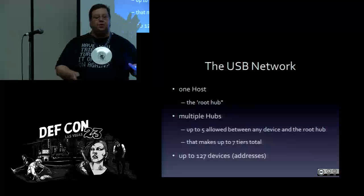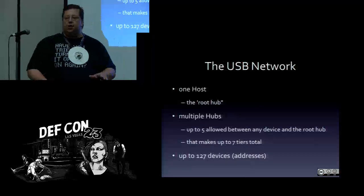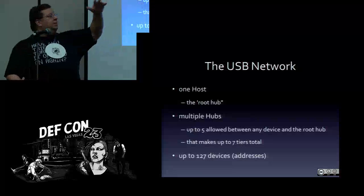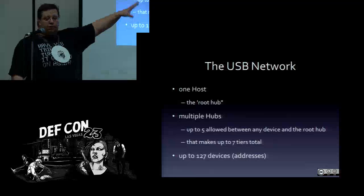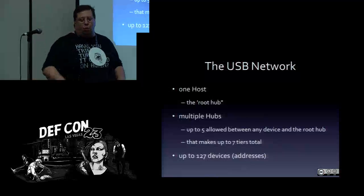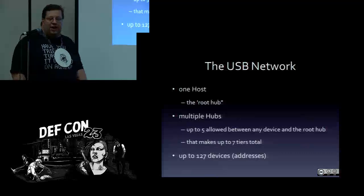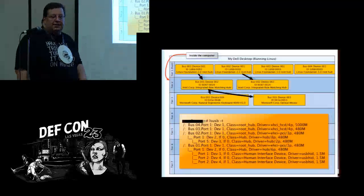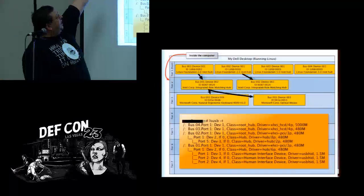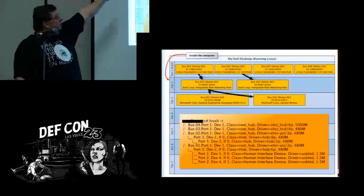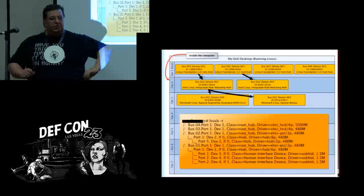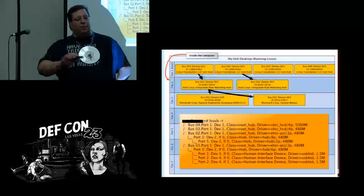There's always one host adapter — that's the one USB master in your computer. Below that there can be a series of hubs; up to five hubs are allowed between any device and the root hub built into your computer. The entire network can only have 127 devices — that's just how the addressing works. Interestingly, there's probably already a hub built into your computer, so you lose one slot off that list. When you look at the back of a desktop and see four ports, those aren't all independent USB — they're actually the first tier of hubs.